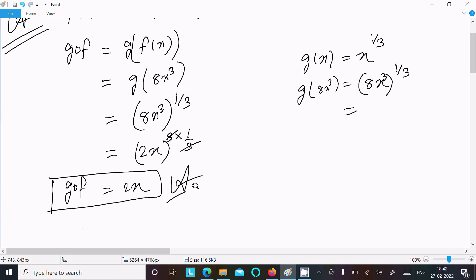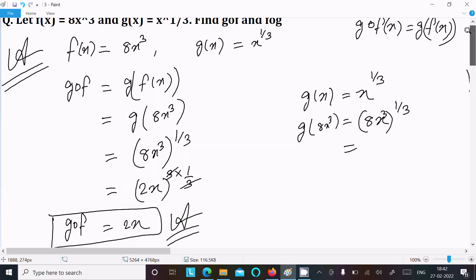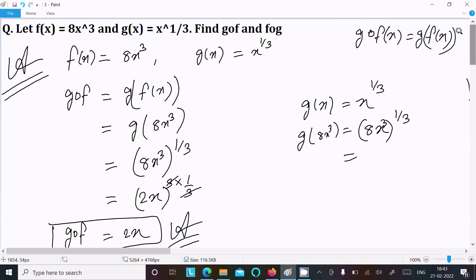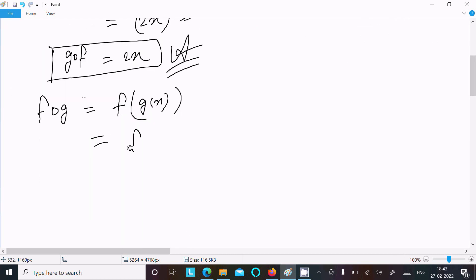After that, we need to calculate fog. So this is fog. Fog, this we can write as f∘g(x). So g(x) value is now x^(1/3), f of x^(1/3). So f(x) value is now 8x³.